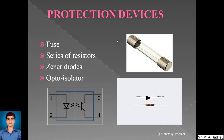The next protection device is a series of resistors. We can use a series of resistors to minimize the voltage, as resistance and voltage are proportional. A series of resistors can be used for protecting the circuit.